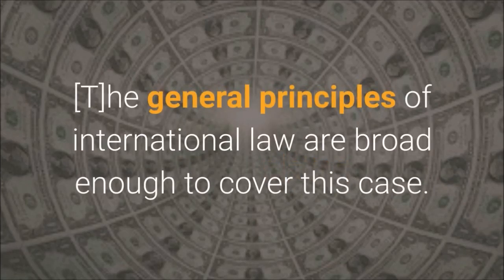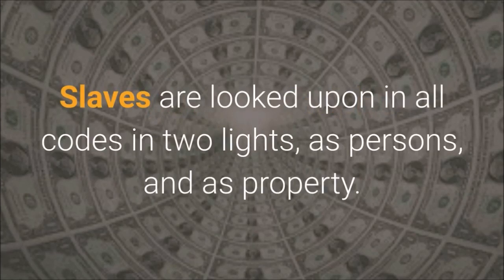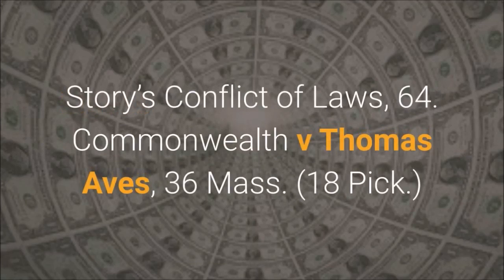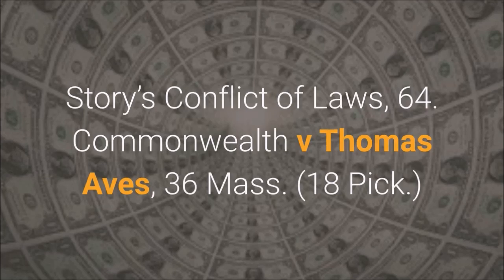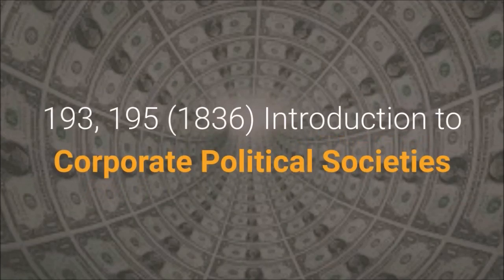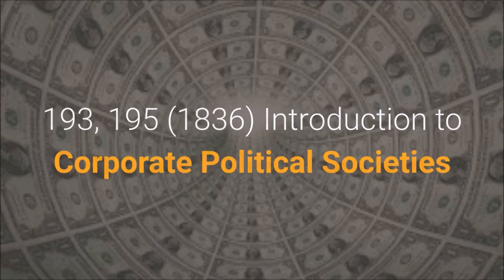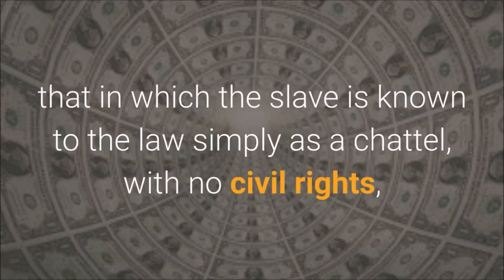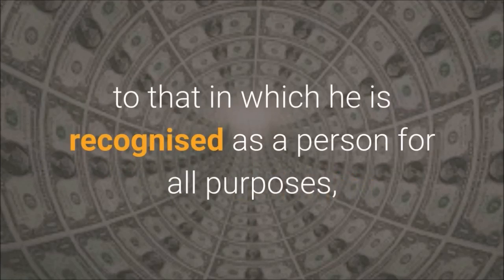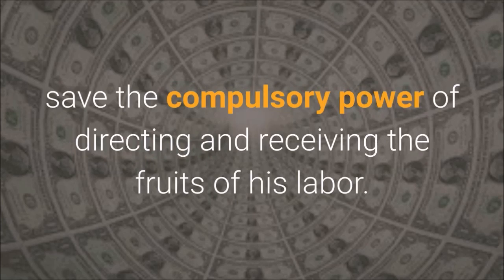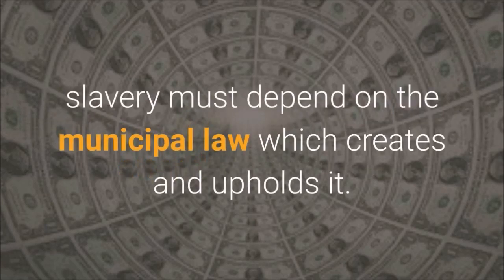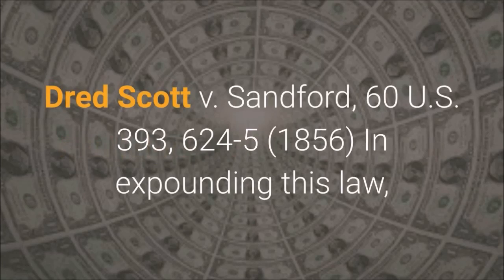The general principles of international law are broad enough to cover this case. Slaves are looked upon in all codes in two lights: as persons, and as property. Story's Conflict of Laws, 64. Commonwealth v. Thomas Aves, 36 Mass., 18 Pick. 193, 195. The status of slavery embraces every condition from that in which the slave is known to the law simply as a chattel, with no civil rights, to that in which he is recognized as a person for all purposes, save the compulsory power of directing and receiving the fruits of his labor. Which of these conditions shall attend the status of slavery must depend on the municipal law which creates and upholds it. Dred Scott v. Sanford, 60 U.S. 393, 624–5, 1856.